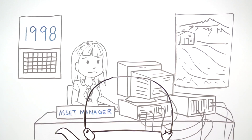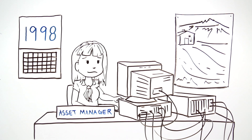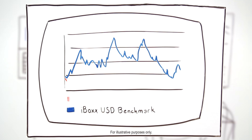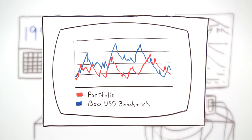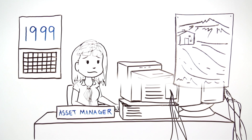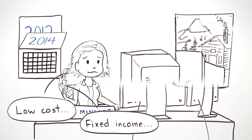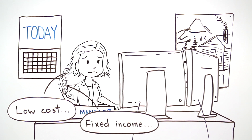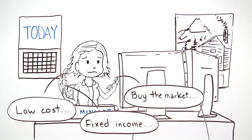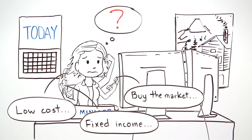iBOX indices were initially used by asset managers to benchmark portfolio performance and risk. Over time, demand for low-cost financial instruments that track the fixed income market, combined with growth of the passive investment industry, created a need for transparent, rules-based fixed income indices that can be easily replicated.